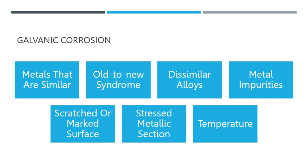A surface that has been damaged or scratched turns anodic to the nearby metallic surface, analogous to the old-to-new syndrome where new steel is anodic to old steel. The difference in electrical potential between the scratched surface and the rest of the structure creates this electrochemical corrosion cell. This is frequently seen in threaded pipes, bolts, marks left by pipe wrenches and other instruments, and marks left by shovels and backhoes. The situation is worsened because metal thickness is also decreased in these places.